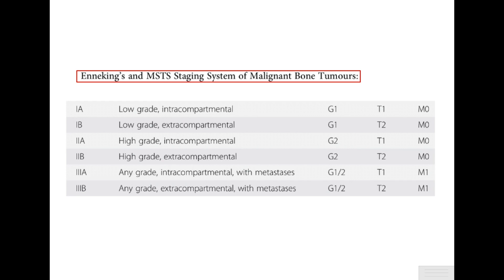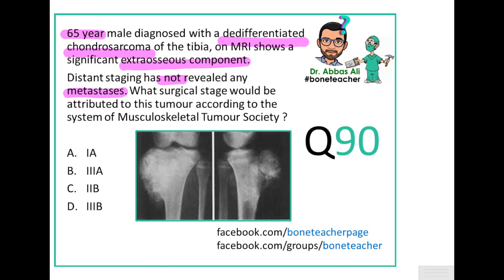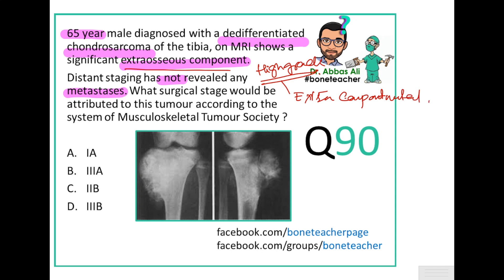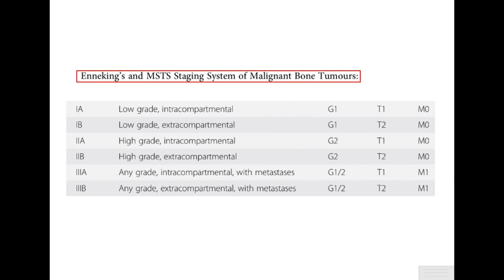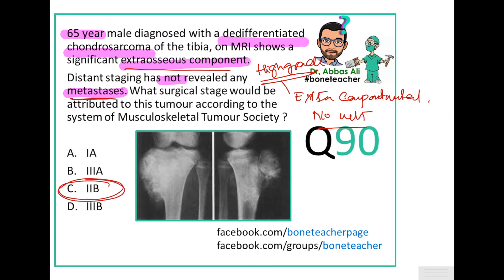Any grade with metastasis is considered Stage 3 — intracompartmental with metastasis is 3A, and extracompartmental with metastasis is 3B. Coming back to the MCQ: de-differentiated means it is a high-grade tumor with extracompartmental involvement (extra-osseous component), and there is no metastasis. High grade, extracompartmental, no metastasis — that fits Stage 2B. So the correct answer is 2B.